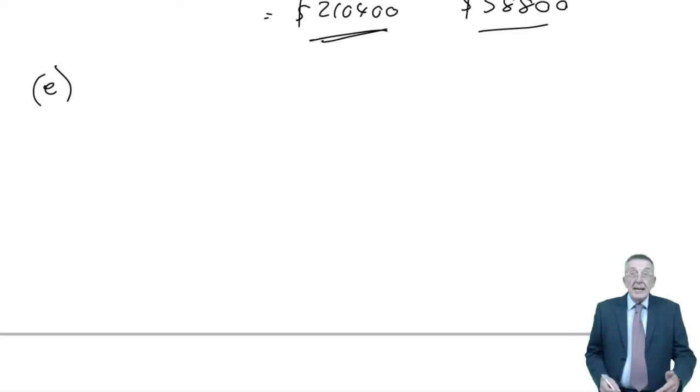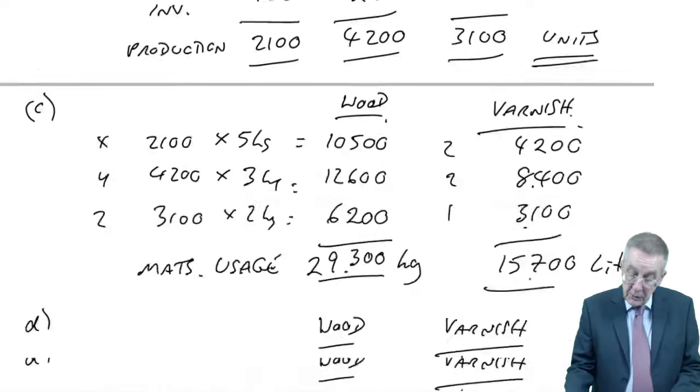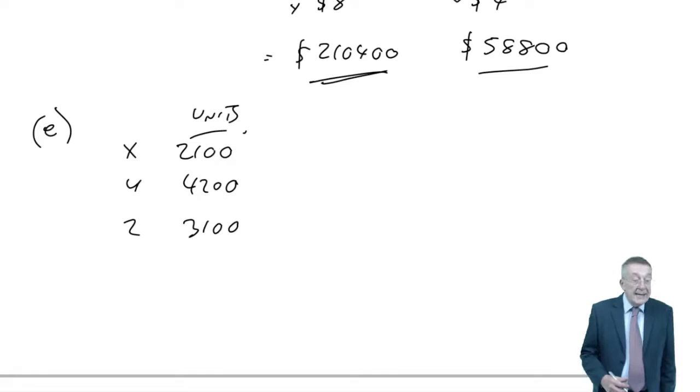Well, we don't have enough now that even if it wasn't obvious at the beginning, it's obvious now. The labour we need depends on how many we produce. Well, we know what the production is of X, Y and Z. Where was it? 2,100, 4,200, 3,100.